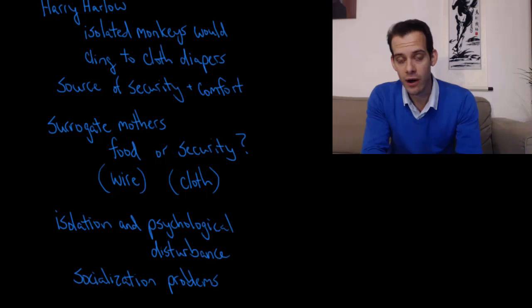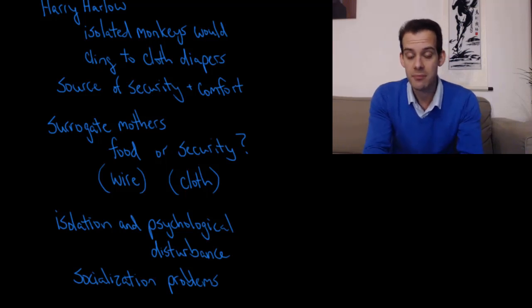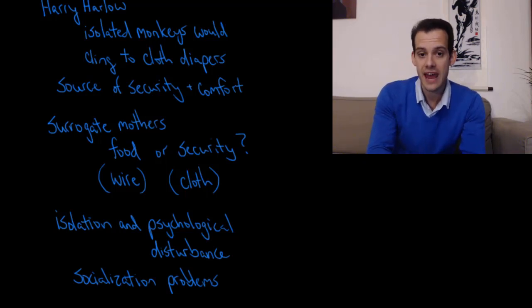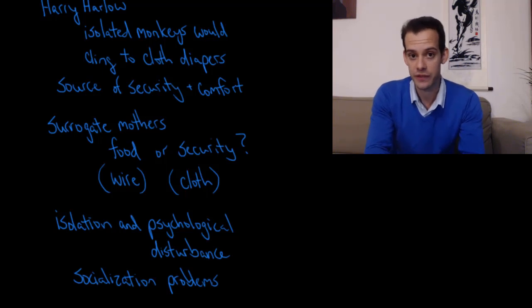Initially when Harlow was conducting these studies, he thought maybe this cloth was all they needed to form this proper relationship. They had something to cling to, some sense of security, maybe they would be okay. It turns out that these monkeys raised in isolation did later show signs of psychological disturbance and had problems with socialization. This suggested that just a piece of cloth was not enough to provide this true relationship for these young monkeys.